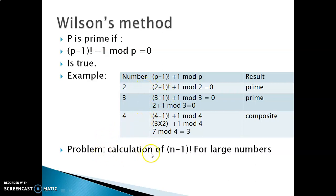But the problem with this method is that we have to find n minus 1 factorial, and for large numbers it is a huge complex problem. Now these are not all the methods, there are more methods.